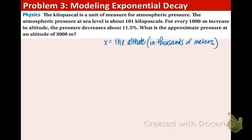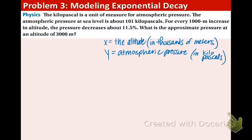So x is going to be the altitude in thousands of meters. Y is going to be the atmospheric pressure measured in kilopascals. The reason why x and y are the way they are, remember the y value always depends on the x. So the pressure depends on the altitude. That's how you know which one's x and which one's y. A is going to be the initial pressure in kilopascals, and that is the number 101 they told us right here.